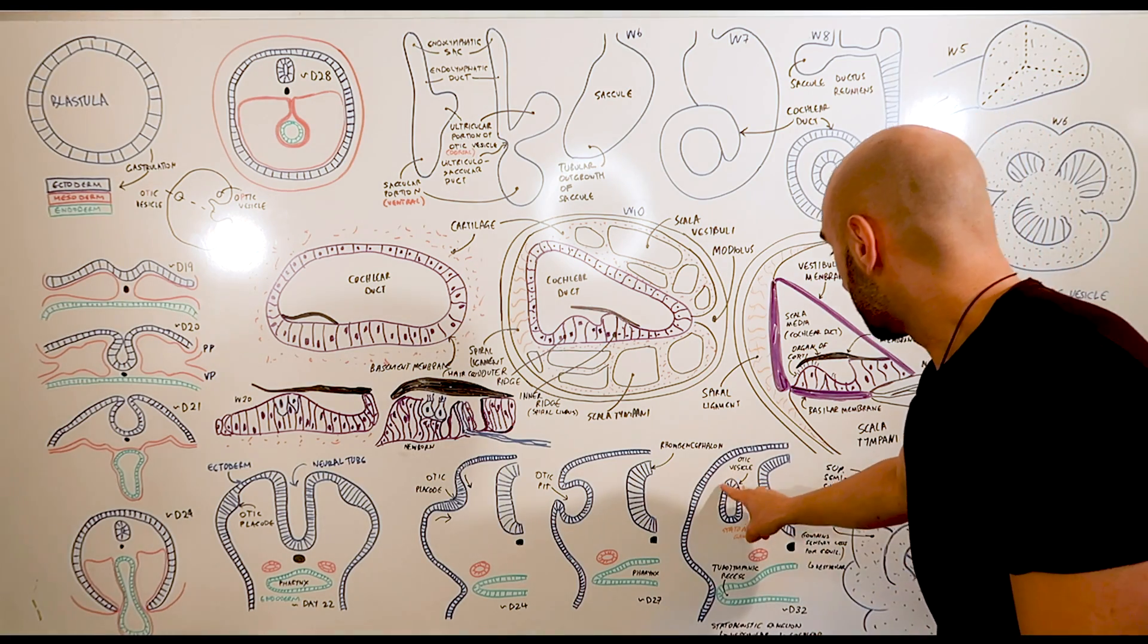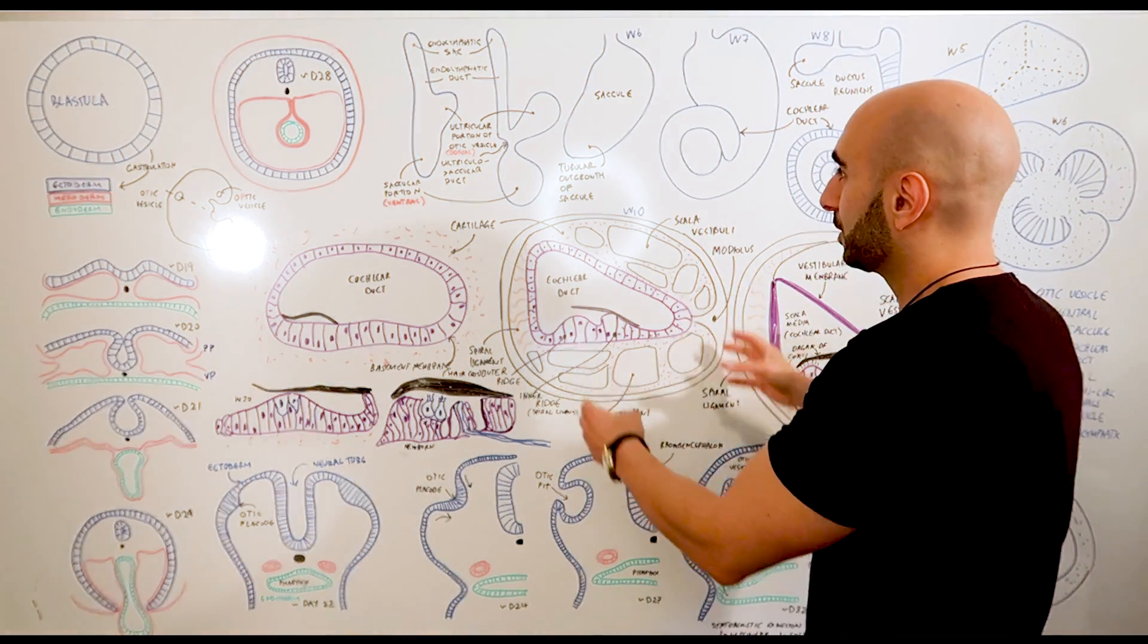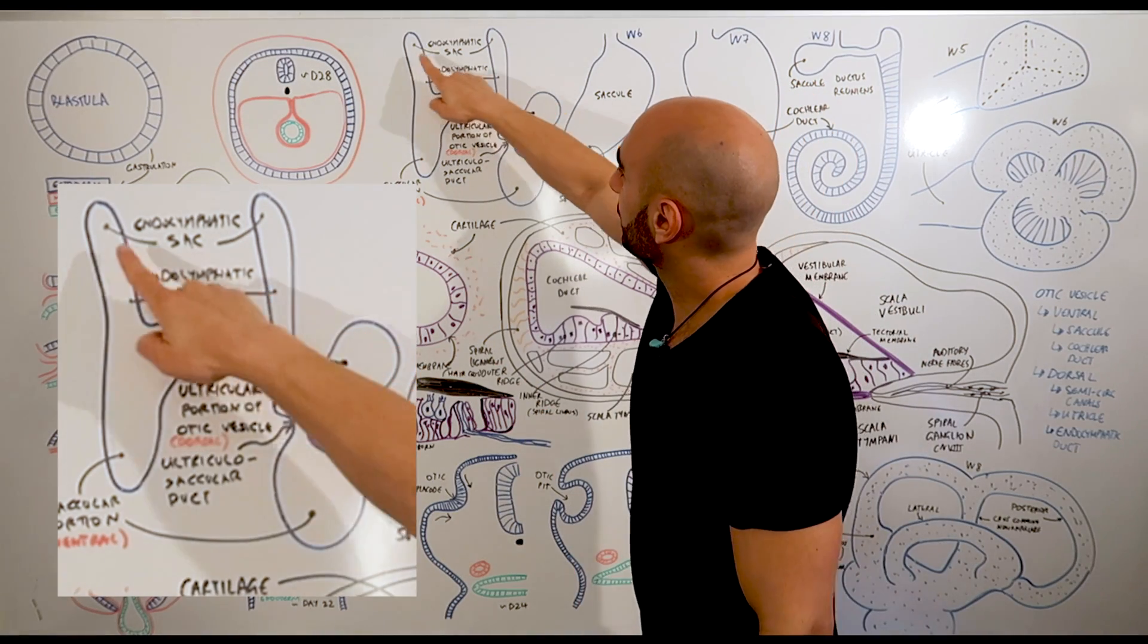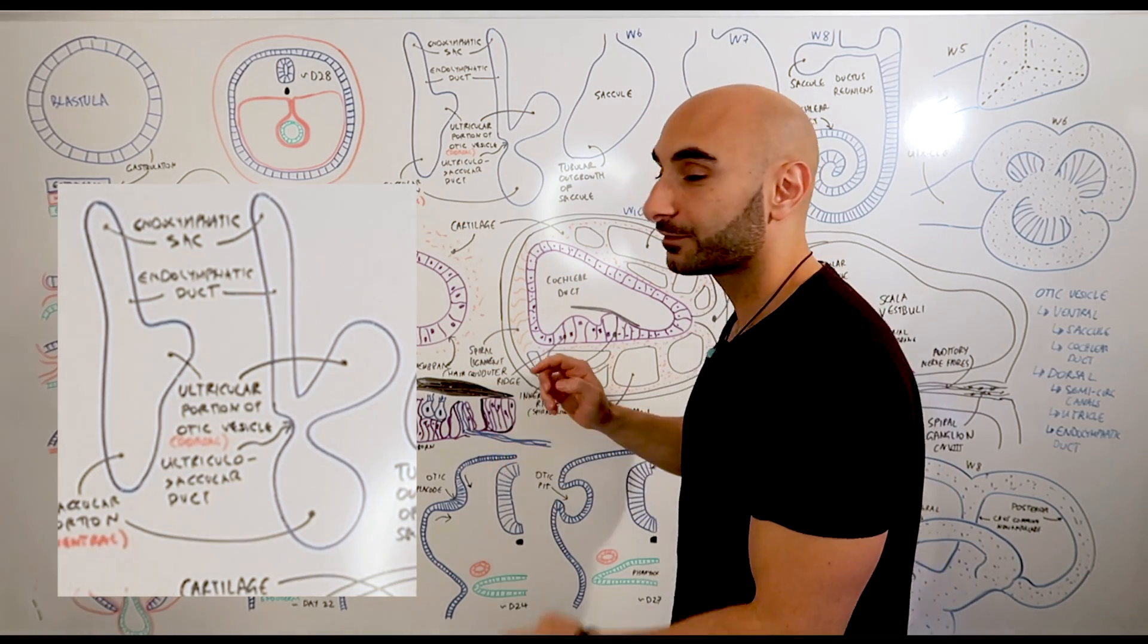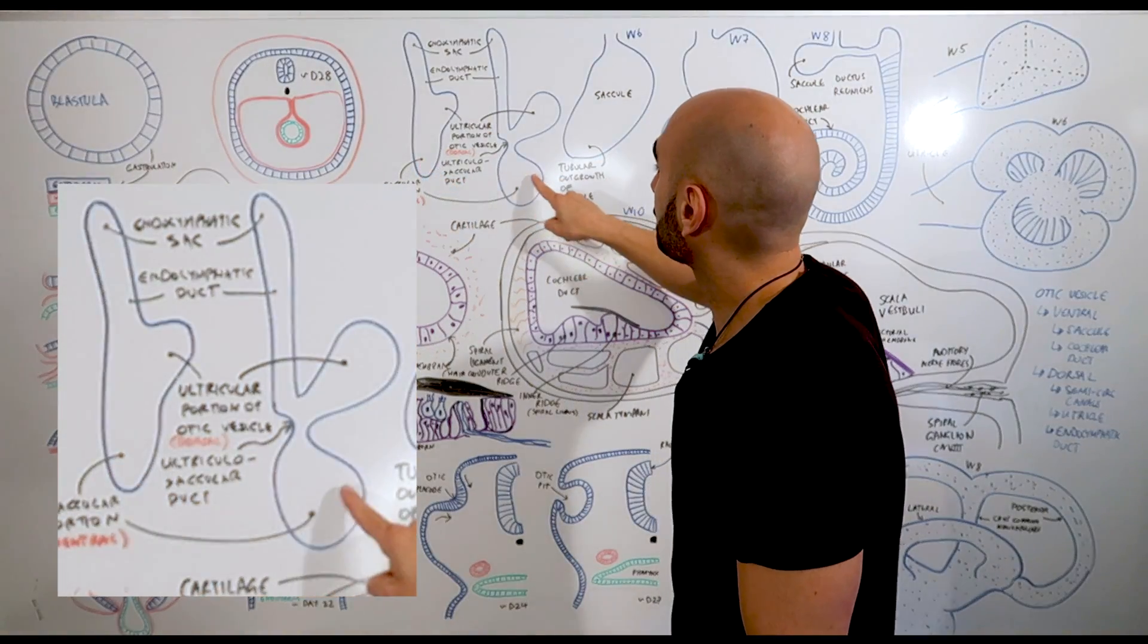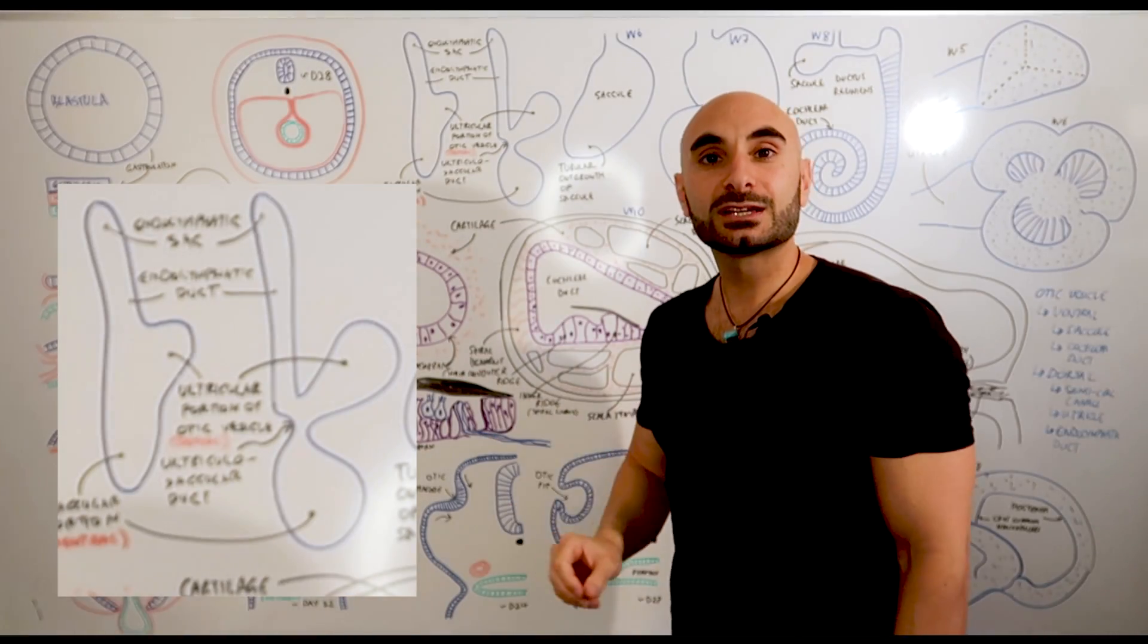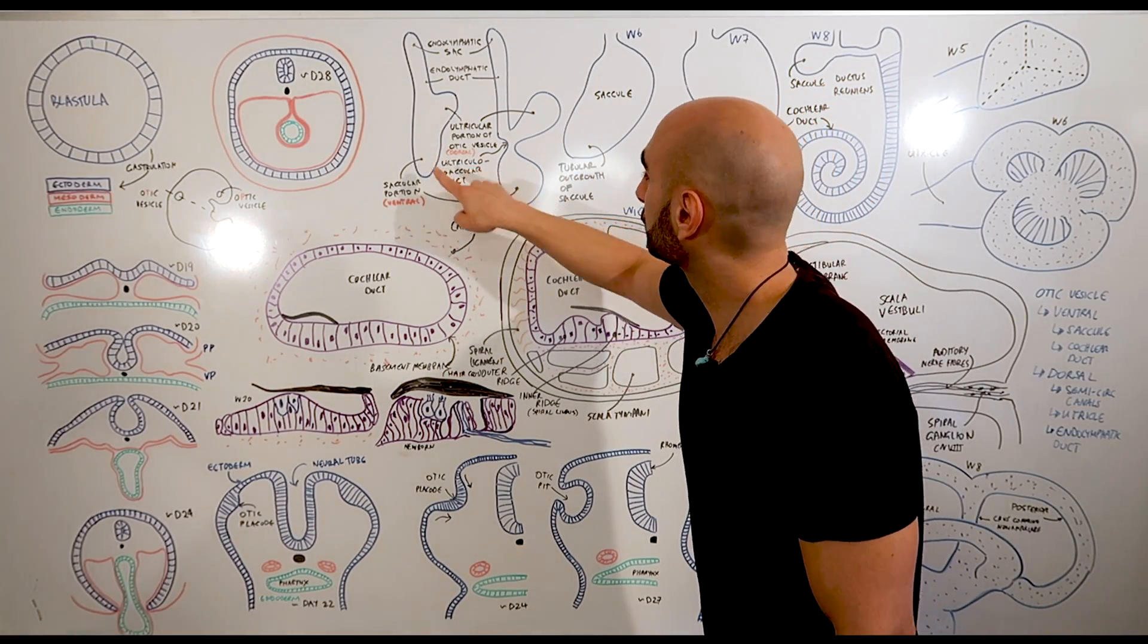So this otic vesicle will differentiate into two main parts. Let's focus our attention here. This is the otic vesicle - it's differentiated a little bit. We'll notice at the top here an endolymphatic sac and the duct. And there are two main portions which are the focus of the rest of the video: the dorsal portion and the ventral portion. The dorsal portion is the utricular portion, and the ventral portion is the saccular portion. Let's first talk about the saccular portion, the ventral portion.